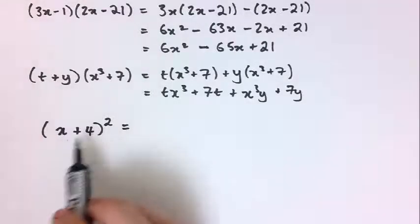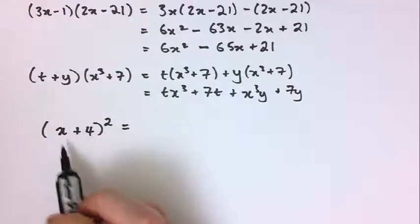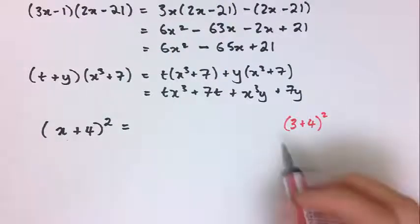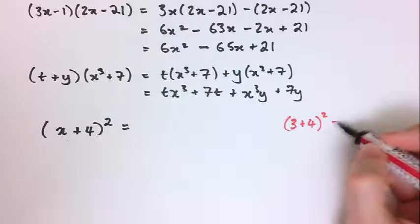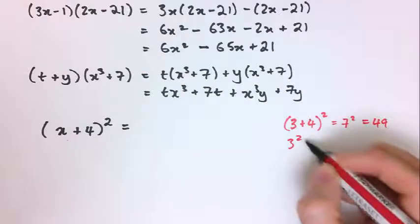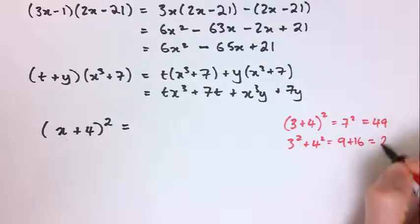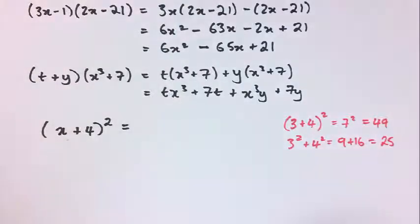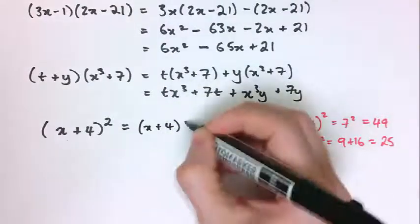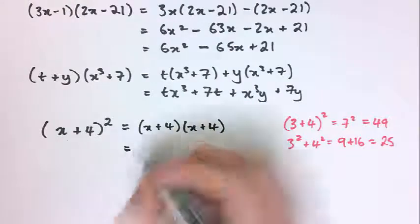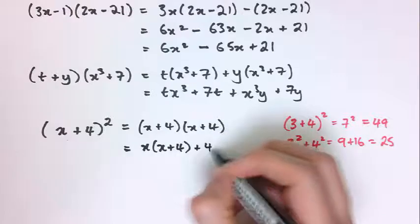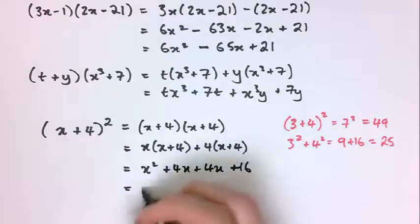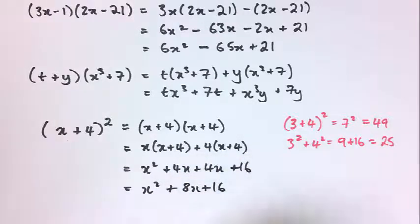People often make mistakes with something like (x + 4) squared. The most common error is to say that's just x squared plus 4 squared, which is x squared plus 16. But you can check with a value: for x equals 3, (3 + 4) squared is 7 squared, which is 49 — but 3 squared plus 4 squared is 9 plus 16, which is 25. They're not equal. That's because (x + 4) squared means (x + 4) times (x + 4): x times (x + 4) plus 4 times (x + 4), giving x squared plus 4x plus 4x plus 16, which is x squared plus 8x plus 16.